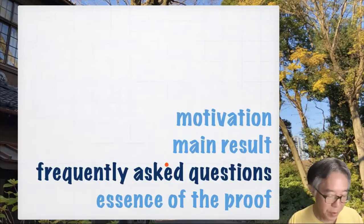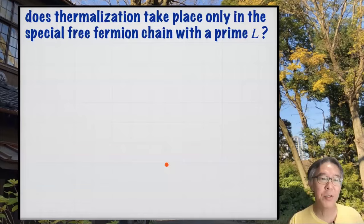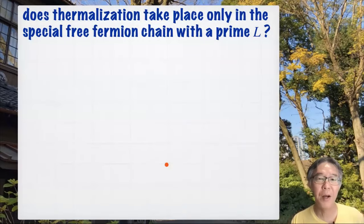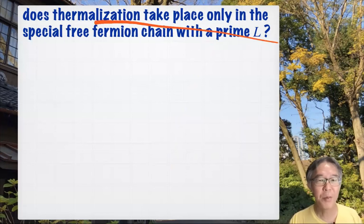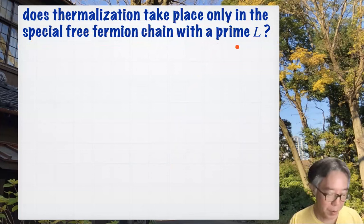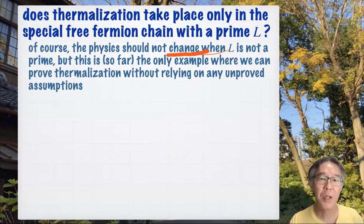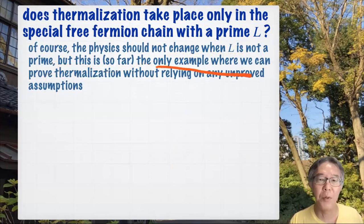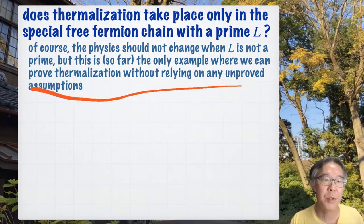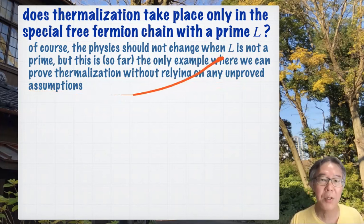Now I want to answer some frequently asked questions. We have a chain whose length is a prime — so does thermalization take place only in the special free fermion chain with a prime L? That's very weird. But of course, the physics should not change when L is not a prime. Mathematically speaking, this is so far the only example where we can prove thermalization without relying on any unproven assumptions. So prime L is a technical limitation.